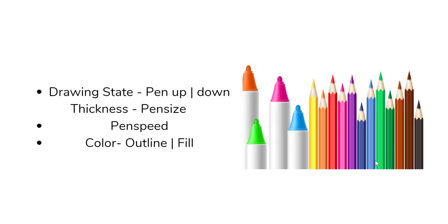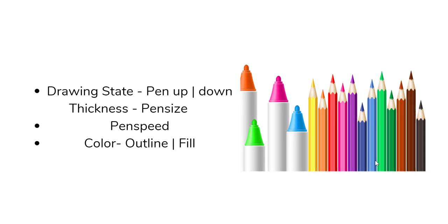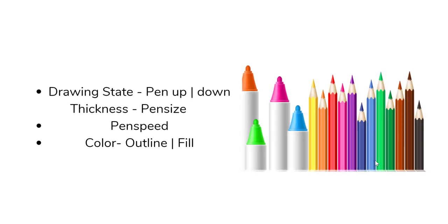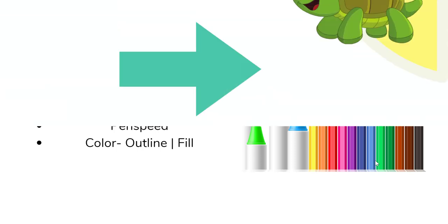Once we discuss turtle attributes, we will discuss pen attributes. The pen can be in an up state — meaning it is not drawing even if you are moving it — or it can be in a down state. We can also set different thicknesses of the line, decide the pen size, decide the speed of the pen, and of course choose different colors for the outline and for the fill color.